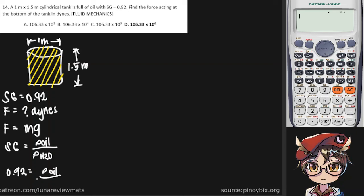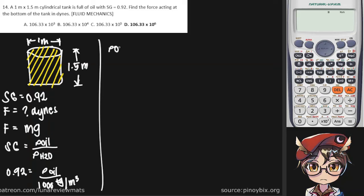We know that the density of water is 1,000 kilograms per cubic meter. Therefore, we get the density of our oil at 920 kilograms per cubic meter.